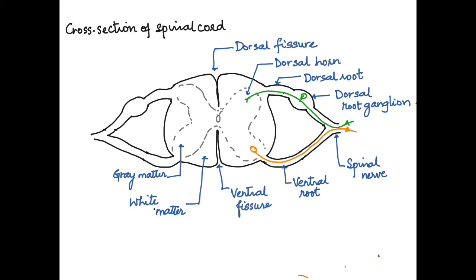The sensory neurons are also called afferent neurons, and the motor neurons are also called efferent neurons. The dorsal side carries sensory neurons and the ventral side has motor neurons. These two join together to form the spinal nerve, which contains both sensory and motor neurons — hence it is called a mixed nerve.